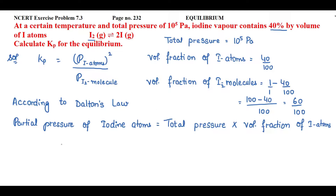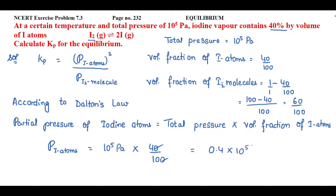Now we will find the partial pressure of iodine atoms. P(I atoms) equals total pressure, which is 10⁵ Pascal, multiplied by the volume fraction of iodine atoms, 40/100. Cancelling gives 0.4 × 10⁵ Pascal. This is the partial pressure of iodine atoms.